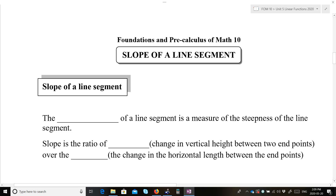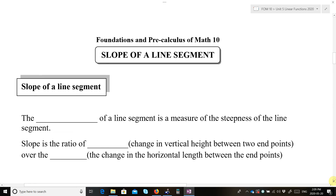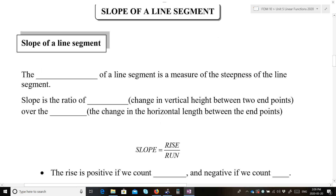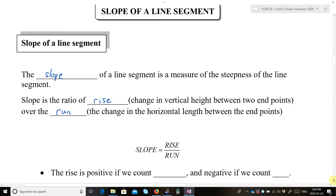Slope of a Line Segment. The slope of a line segment is a measure of the steepness of the line segment. Slope is the ratio of rise over the run. The rise is the change in vertical height between two endpoints, and the run is the change in horizontal length between two endpoints.